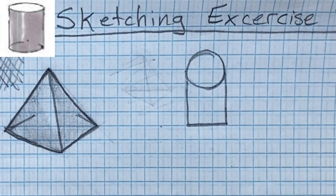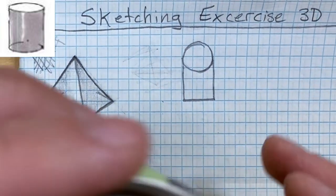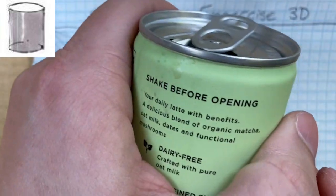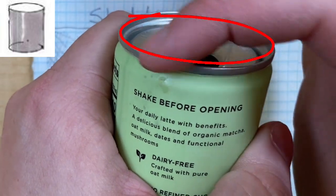If you take a look at it, think of like a can. A can is a circle on the top, but if I look at it from the edge, it's not a circle, it's an oval.